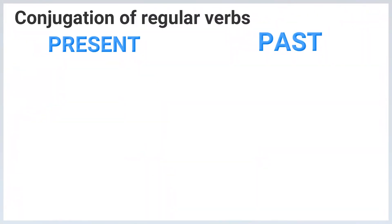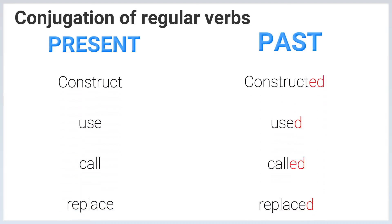Conjugation of verbs. Regular verbs — present and past: Construct / Constructed. Use / Used. Call / Called. Replace / Replaced.